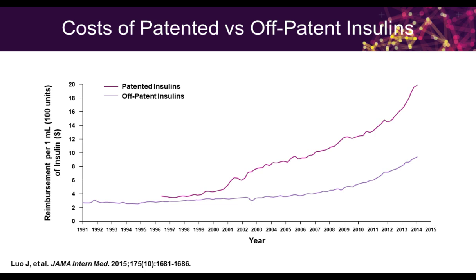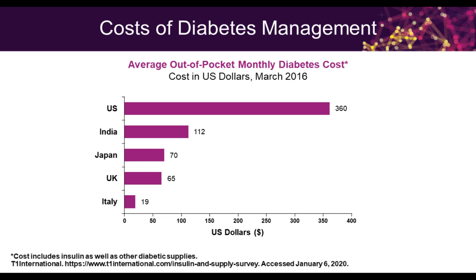This slide looks at the cost of patented versus off-patent insulin — essentially comparing drugs still not prepared as biosimilars or follow-on biologics versus those that are. There's clearly a cost savings in using medications that are off-patent insulin. Some of these off-patent insulins are the older ones, like NPH and regular, that we used before we had the analog class, and that are still used today in many different settings.